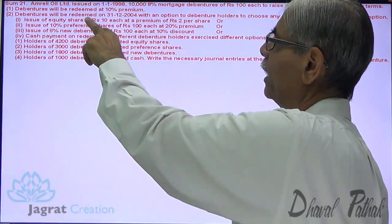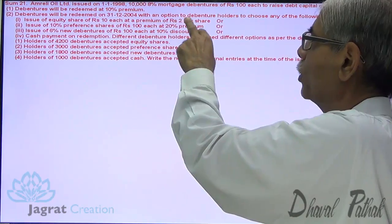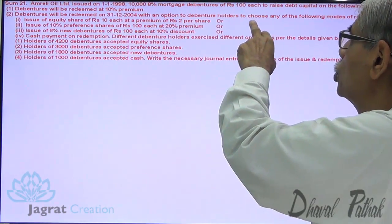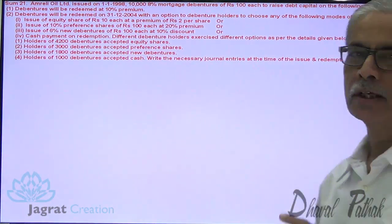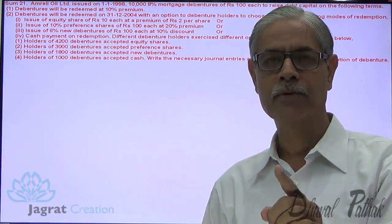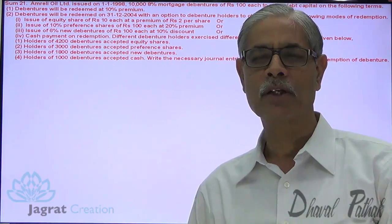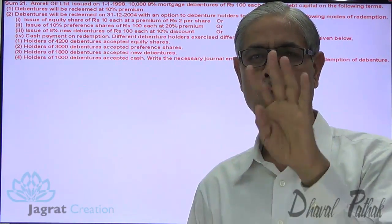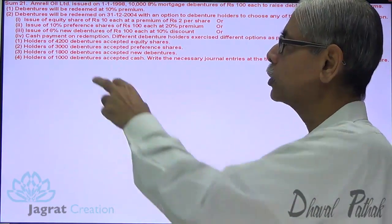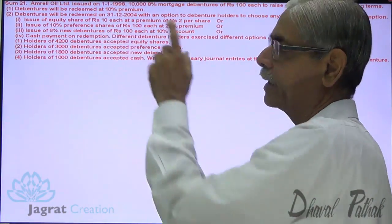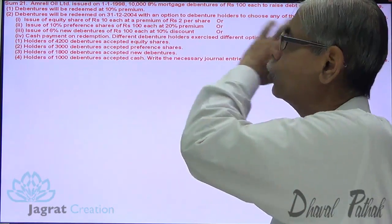Debentures will be redeemed on 31st of December 2004 with an option to debenture holders to choose any of the following modes of redemption. At the time of redemption, debenture holders are given 4 options. First option: those debenture holders who want equity shares can get an equity share of Rs. 10 each at a premium of Rs. 2 per share.